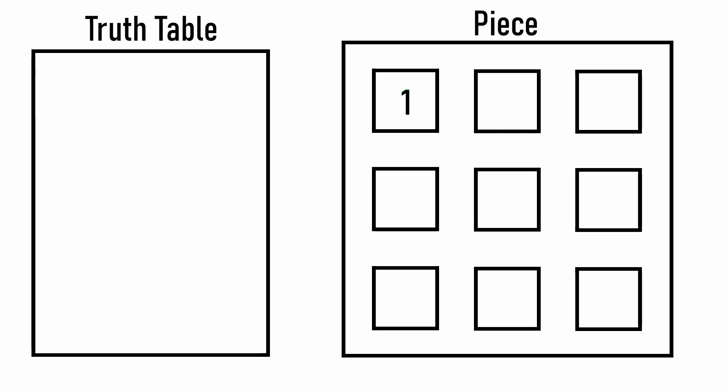The first step to creating a truth table is to figure out what the inputs are. I said in the first video that each piece will have four inputs. Two for just that piece, and two for the entire local board.